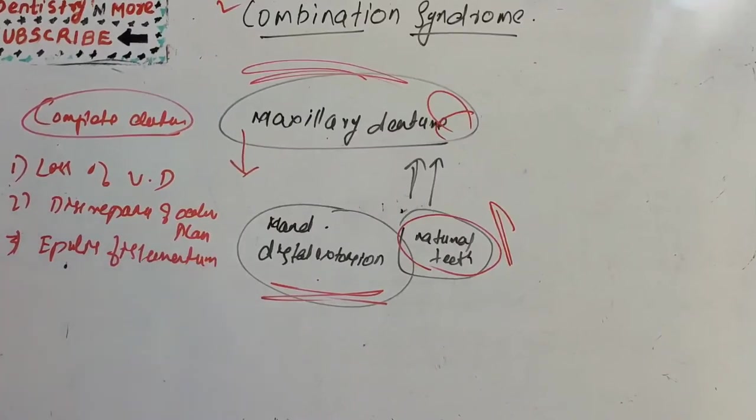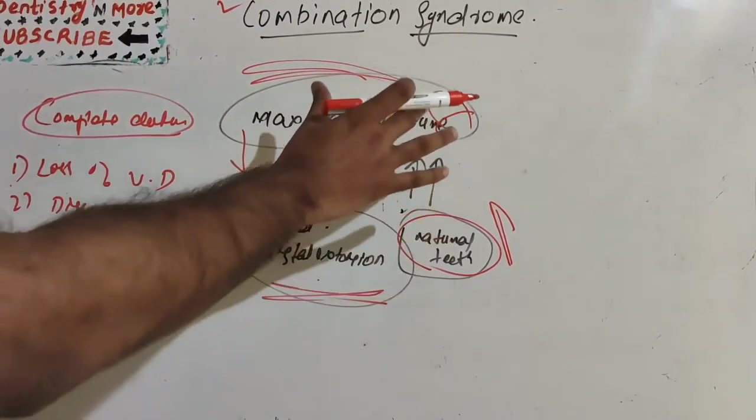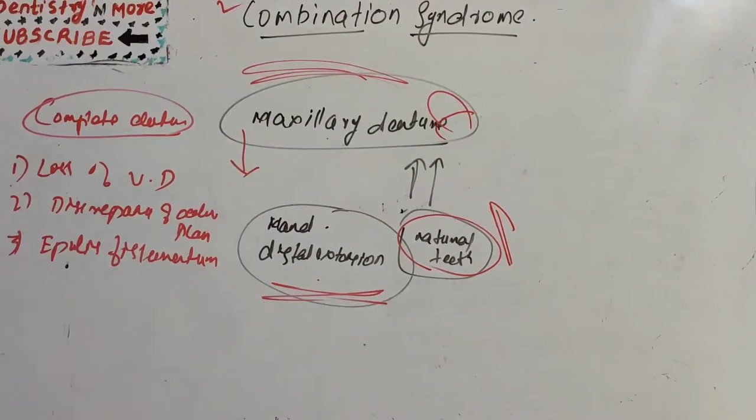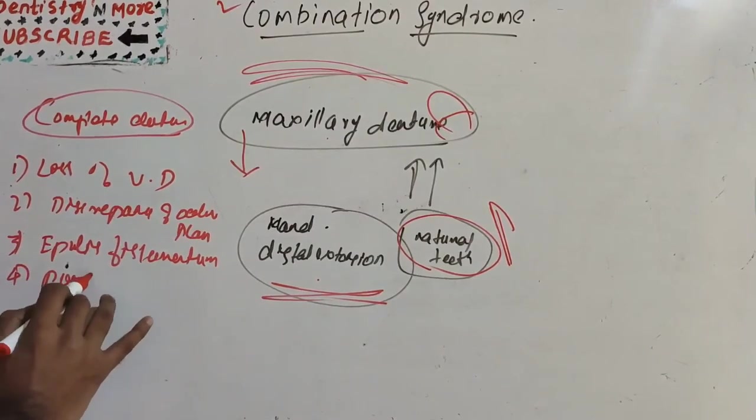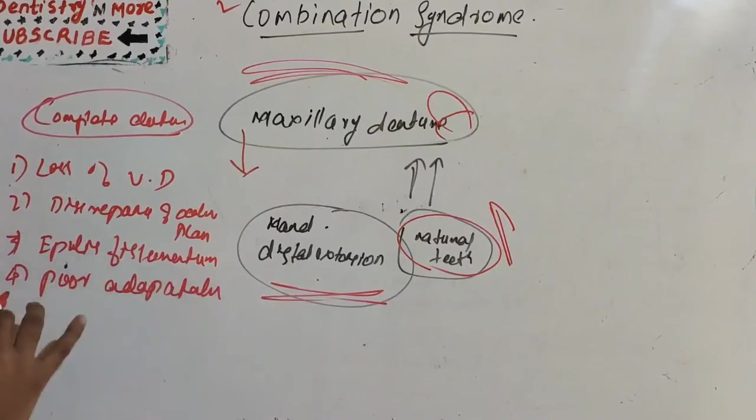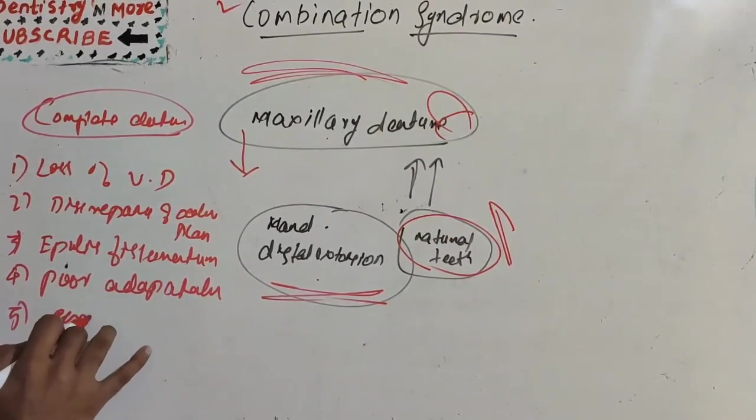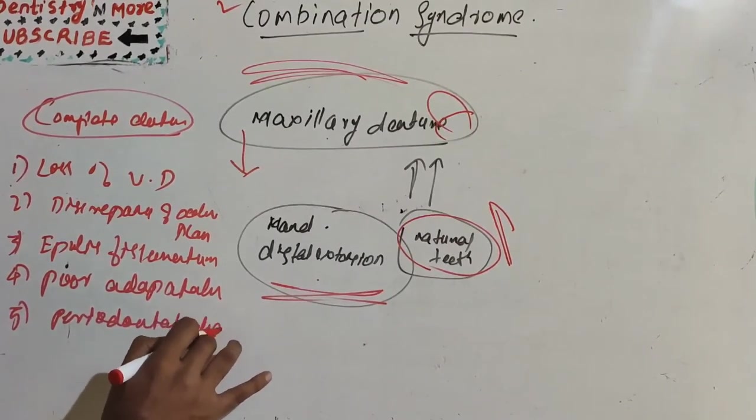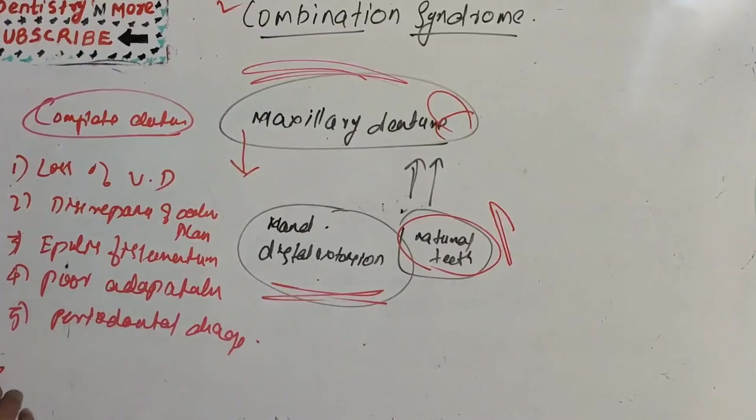Then the development of epulis fissuratum, which is an inflammatory change due to chronic trauma of the denture borders on the oral tissues. Then poor adaptation of the prosthesis, and there will be periodontal changes happening in the oral cavity.